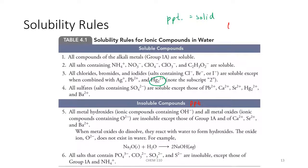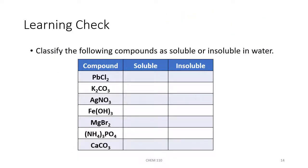We're going to practice using these rules to determine if a given ionic compound will be aqueous — meaning soluble in water — or solid, meaning it would form a precipitate. It's probably best to keep your solubility rules handout next to you for the remainder of this chapter.